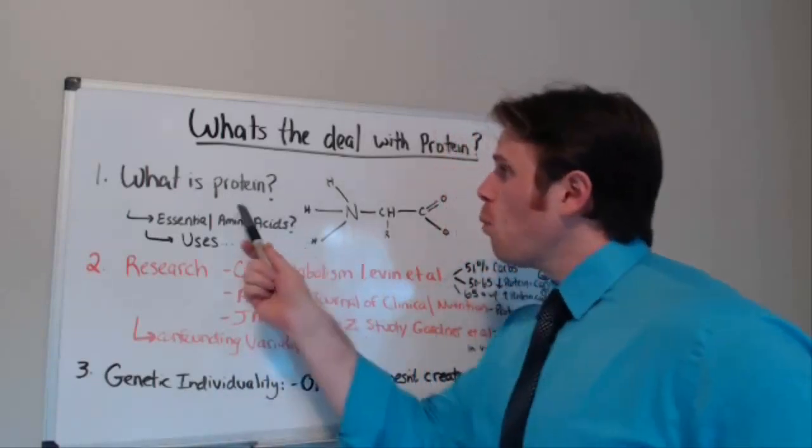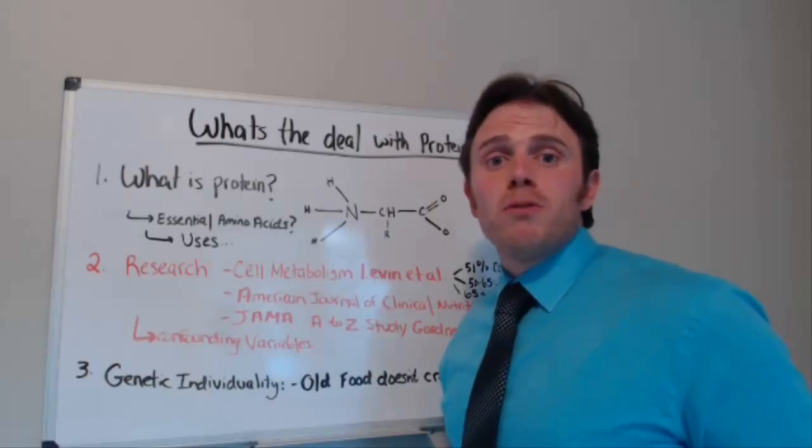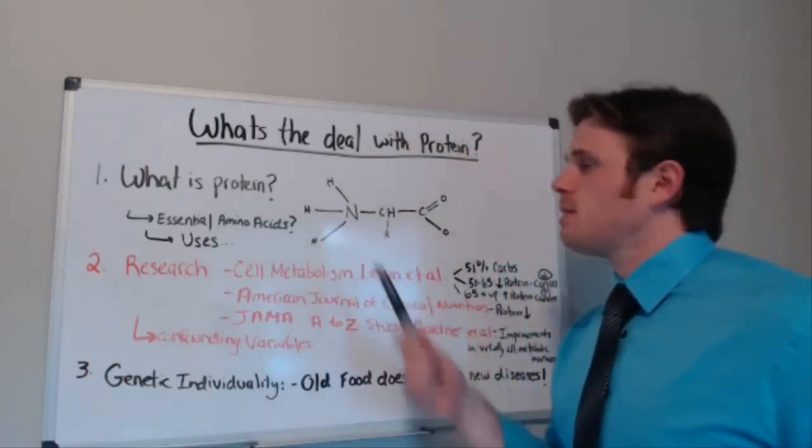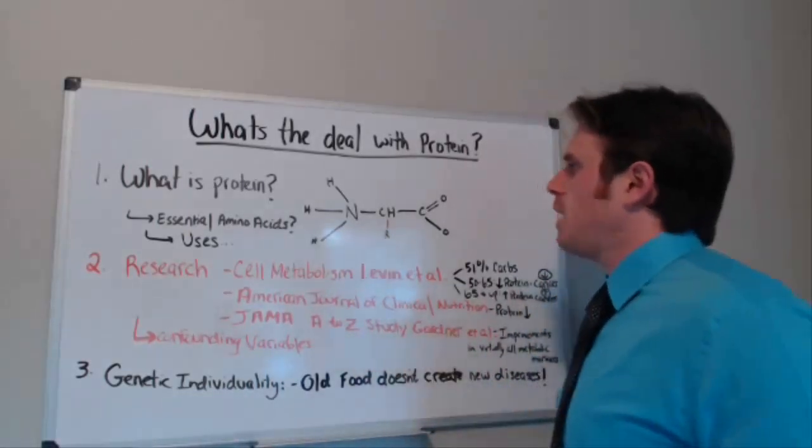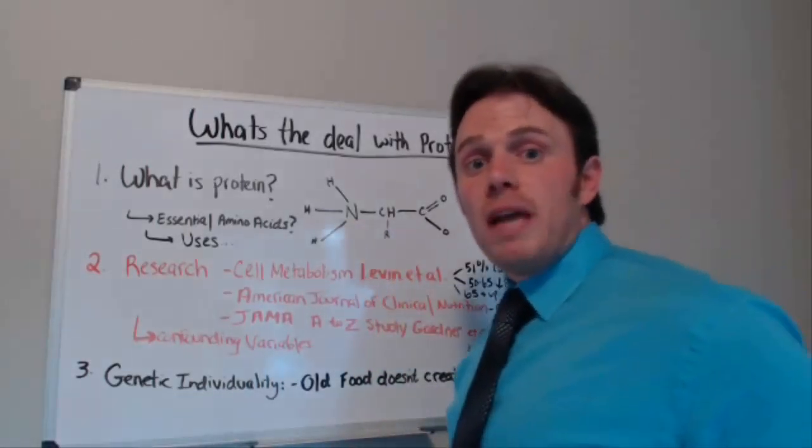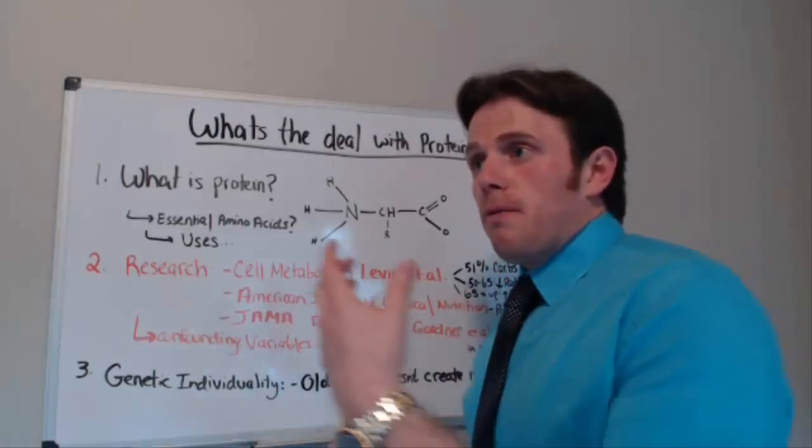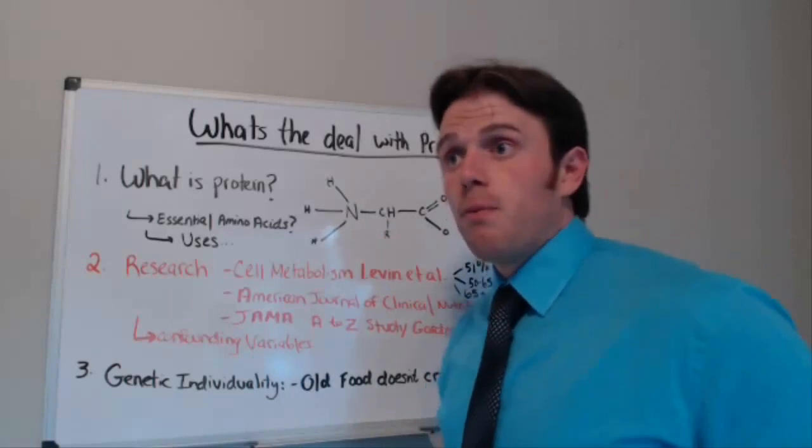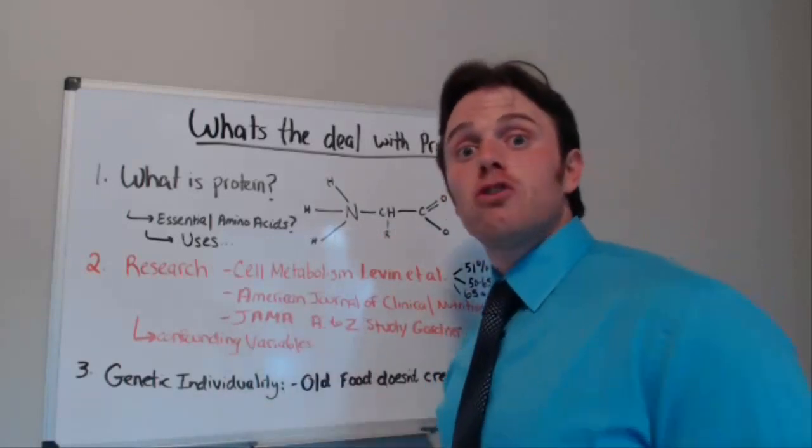So first things first. What is protein? Well, protein is nothing more than amino acids. This is an amino acid - you can see we have some carbon, some nitrogen, some hydrogens. When we have various plant proteins, we have amino acids strung together, and with animal proteins, we'll have amino acids strung together as well.